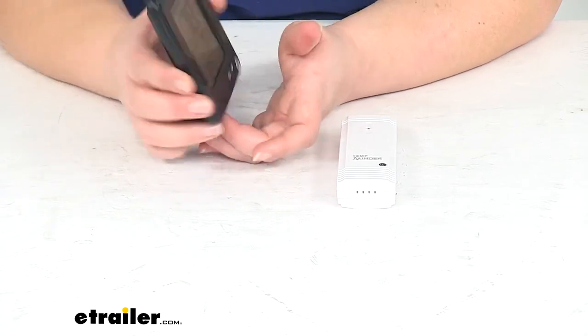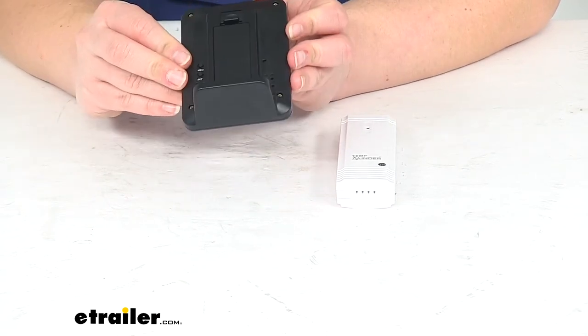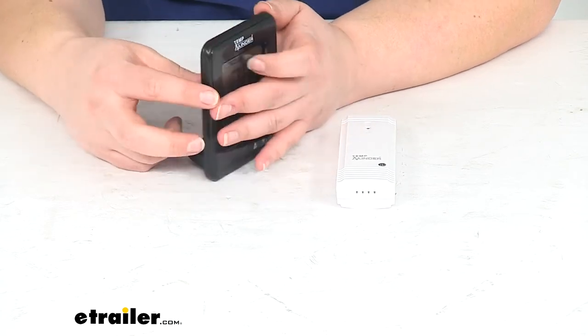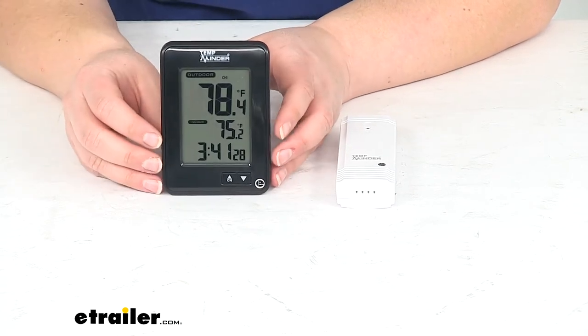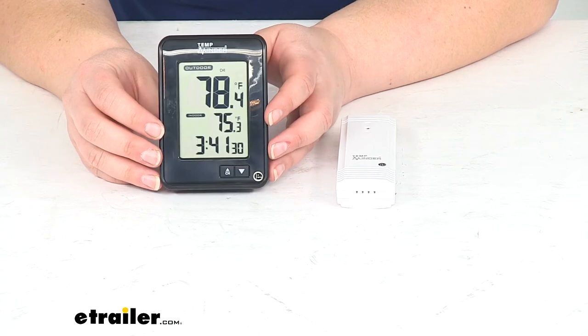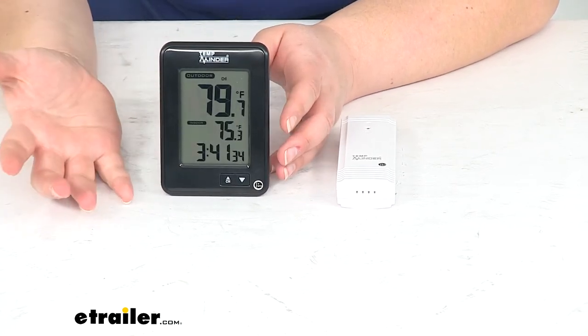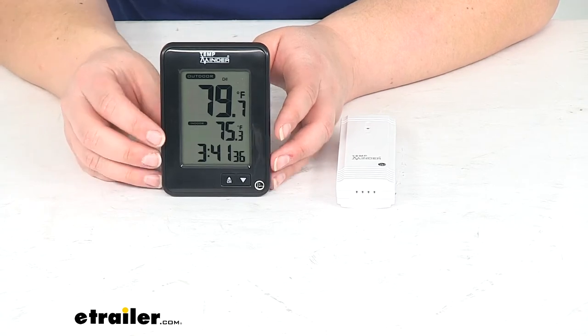To make any adjustments to the clock, just use the set button on the back and adjust the temperature as needed. You can change the clock to read in 24-hour option as well, or military time if you prefer.